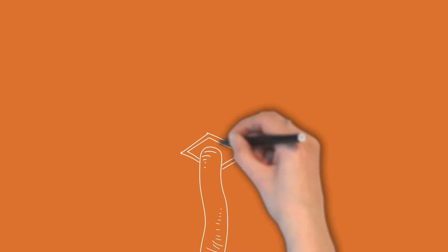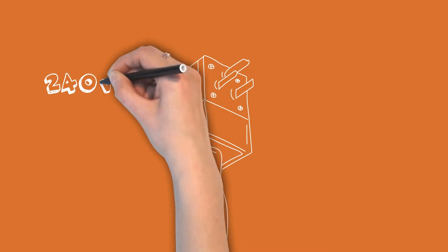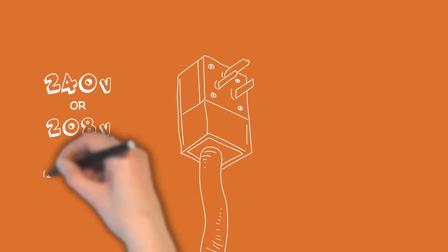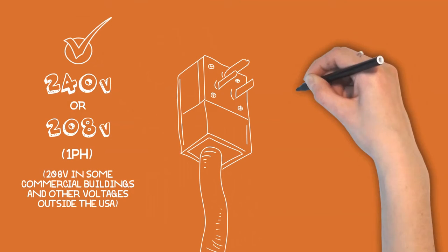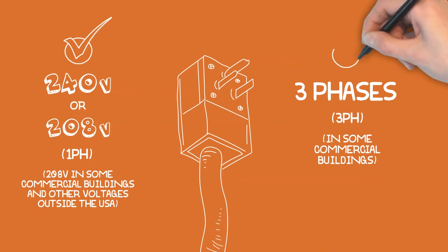Almost all kilns in homes run on single-phase electricity in the USA. On the larger models, there is also a 3-phase version, identified with 3PH. 3-phase power supplies are mostly only found in commercial buildings.